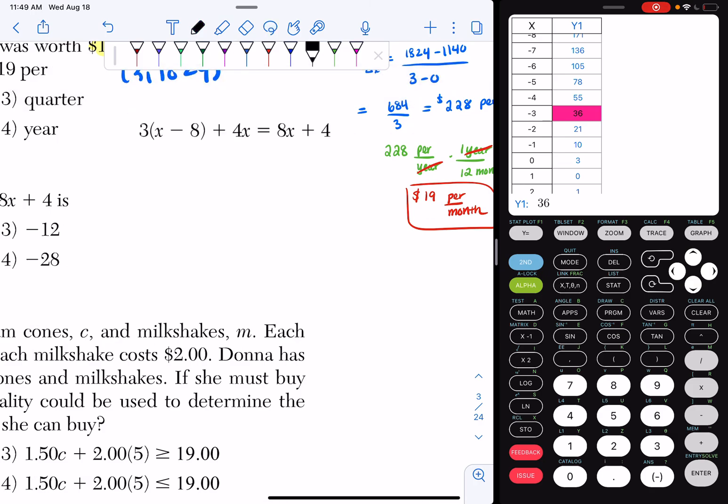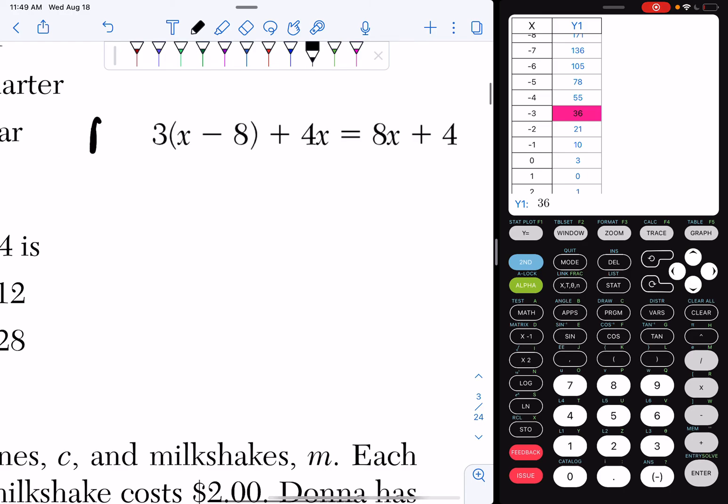So we know our PCVNA technique. The P stands for parentheses, so I'm going to get rid of my parentheses by distributing.